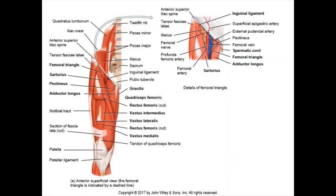All four of these muscles are your quadriceps femoris because they do the same thing. The function of the quadriceps femoris — the rectus femoris, vastus medialis, vastus lateralis, and vastus intermedius — is to extend at the knee. When you do knee extension, that's the job of your quadriceps femoris muscles. That's why when you go to the gym and want to work out your quads, you sit in that machine and kick out over and over again — you're extending at the knee.